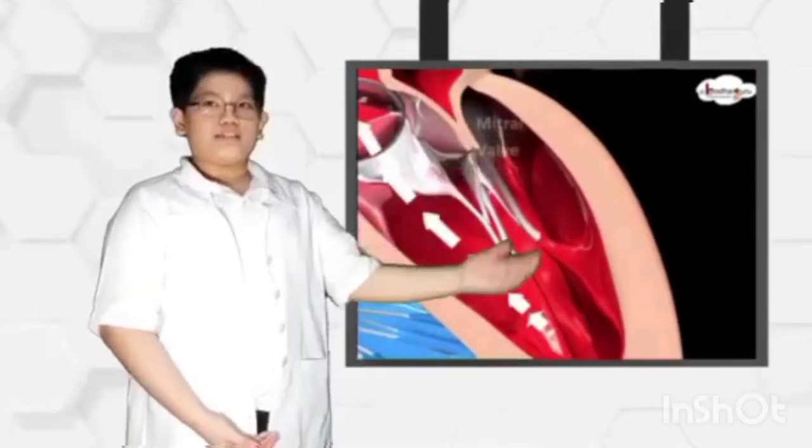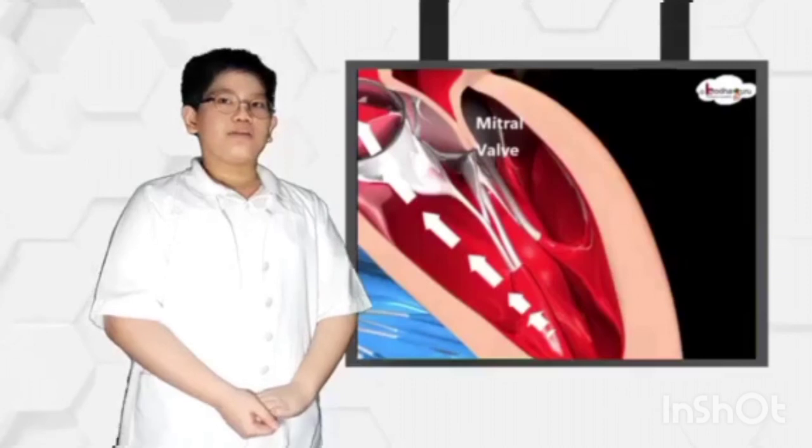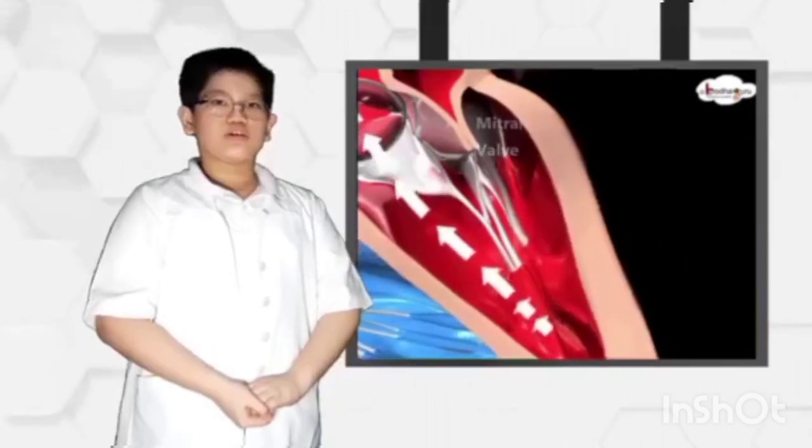When the ventricle is full, the mitral valve shuts. This prevents blood flowing backward into the atrium while the ventricle contracts.